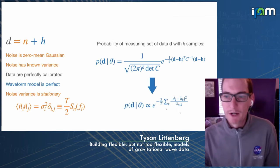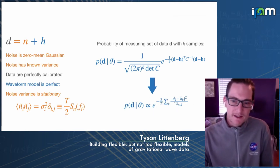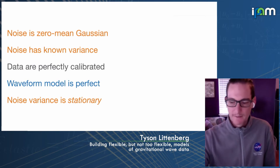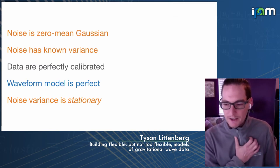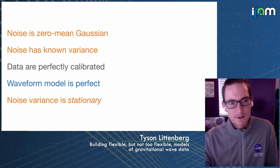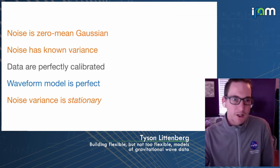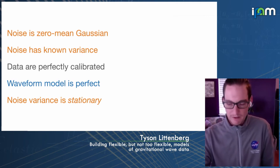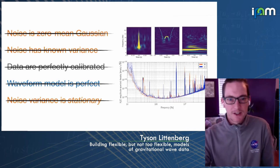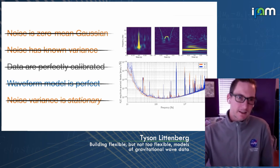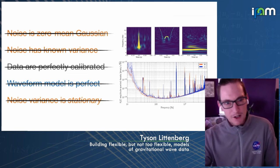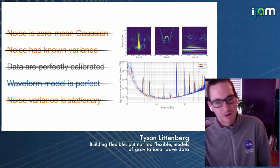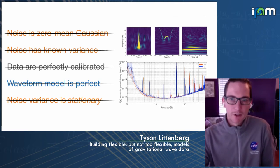We can rewrite this in a more familiar form: the likelihood you'll see cited as equation one in many gravitational wave data analysis papers. That likelihood is built on five key assumptions: the noise is zero-mean Gaussian, we know its variance, the variance is stationary, there are no calibration problems, and we have perfect waveform models. And all five of those assumptions are wrong.